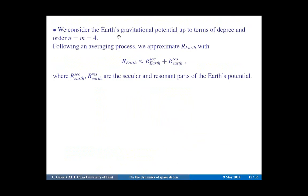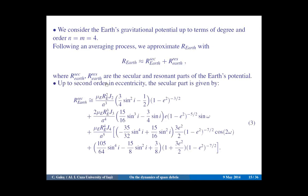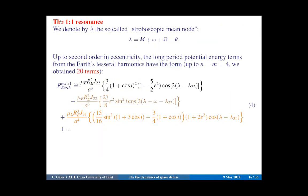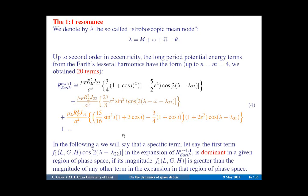We consider the Earth's gravitational potential up to degree and order 4. Following the averaging process, we approximate the disturbing function due to the Earth by its secular and resonant parts. Up to second order in eccentricity, the secular part has a form where the most important contribution is due to J2. In the case of the 1-to-1 resonance, we found 20 terms, and here are listed three of them. We introduced a heuristic definition to compare different terms.